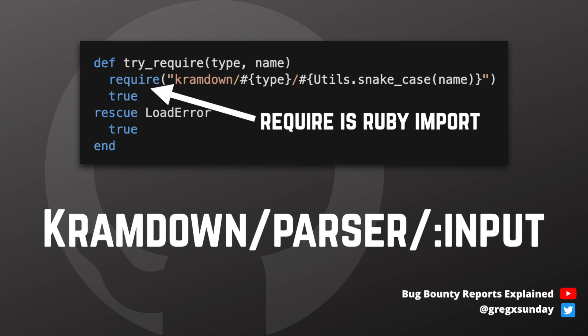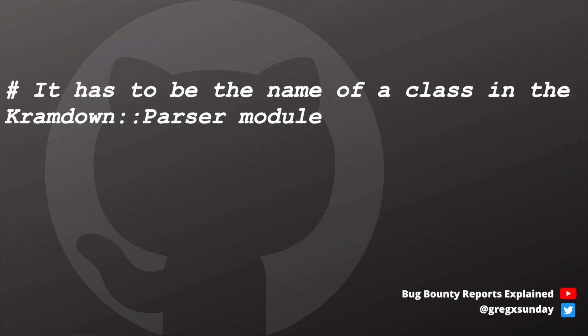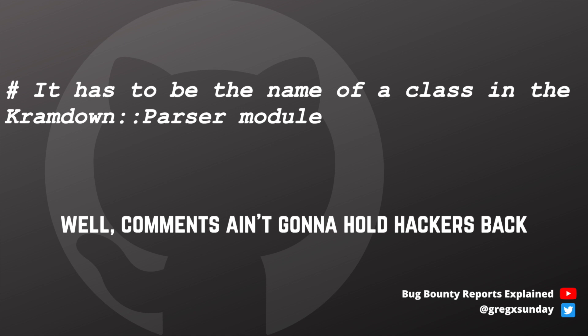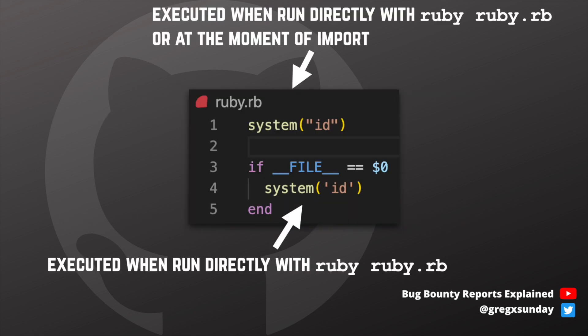That function created a path — kramdown/parser/[input option] — and tried to import that file. The idea was to give the user the ability to use different parser functions from the kramdown/parsers directory. However, this function did not forbid putting in a dot-dot-slash sequence in the input option, making it possible to perform a directory traversal attack.